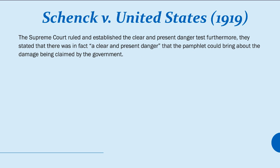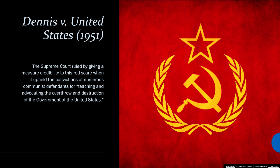In Schenck v. United States (1919), the Supreme Court established the clear and present danger test, stating there was in fact a clear and present danger that the pamphlet could bring about the damage claimed by the government. In Dennis v. United States (1951), the Supreme Court upheld the convictions of numerous communist defendants for teaching and advocating the overthrow and destruction of the government of the United States, giving credibility to the Red Scare and reflecting Cold War-era fears about the spread of communism.